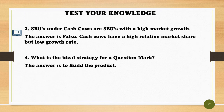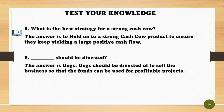Question 3: SBUs under Cash Cows are SBUs with a high market growth — the answer is false. Cash Cows have a high relative market share but a low growth rate. Question 4: What is the ideal strategy for a Question Mark? The answer is to build the product. Question 5: What is the best strategy for a strong Cash Cow? The answer is to hold on to a strong Cash Cow product to ensure they keep yielding a large positive cash flow.